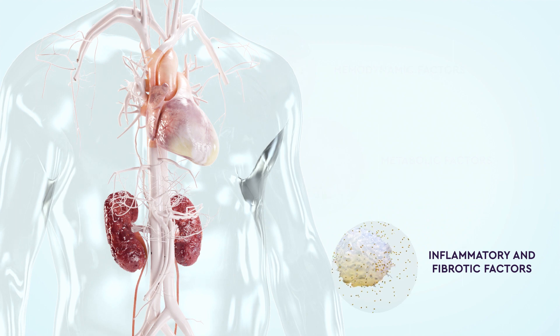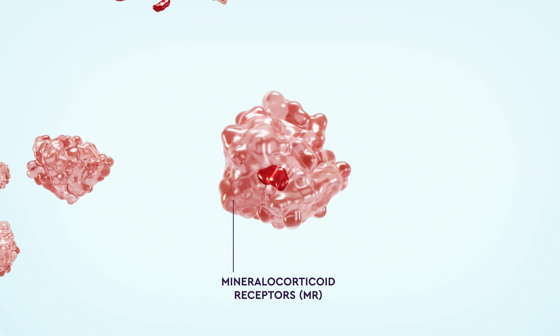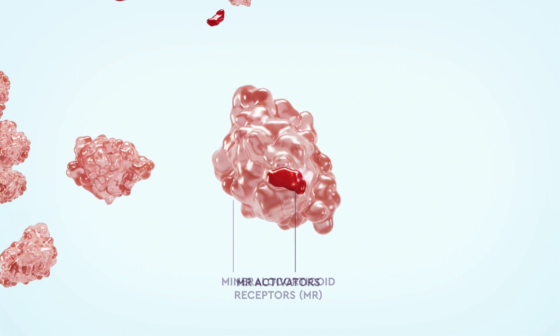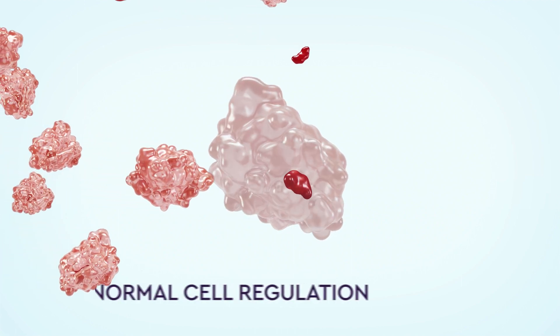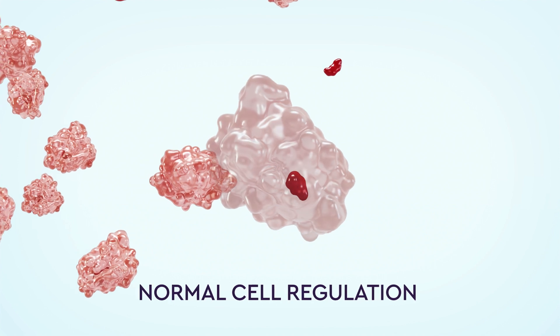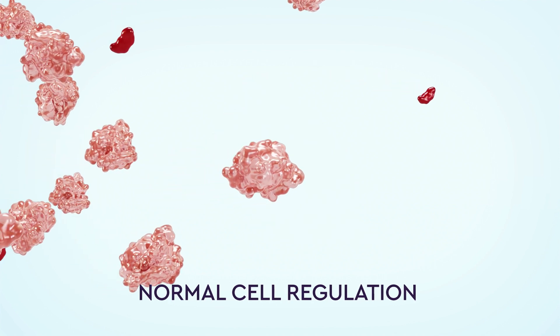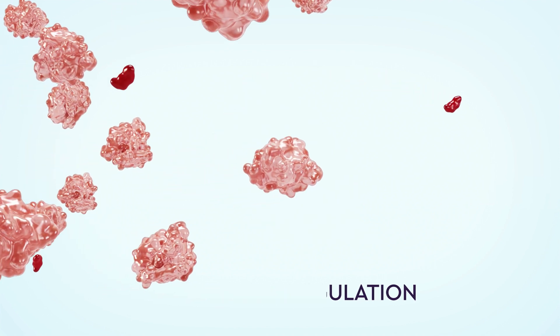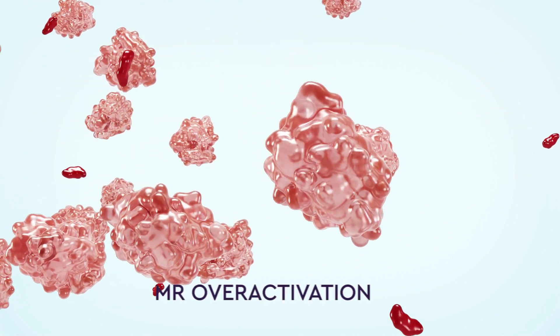The mineralocorticoid receptor (MR) is a key trigger of inflammation and fibrosis. Under normal conditions, MR signaling regulates electrolyte and fluid balance within the kidneys. However, the MR may become pathologically over-activated under certain conditions, like type 2 diabetes.